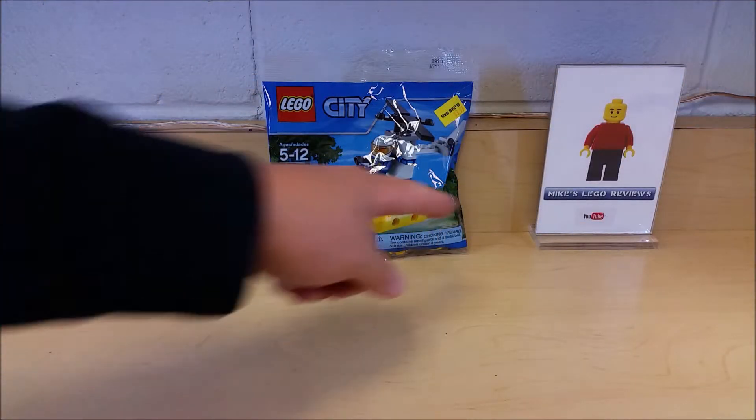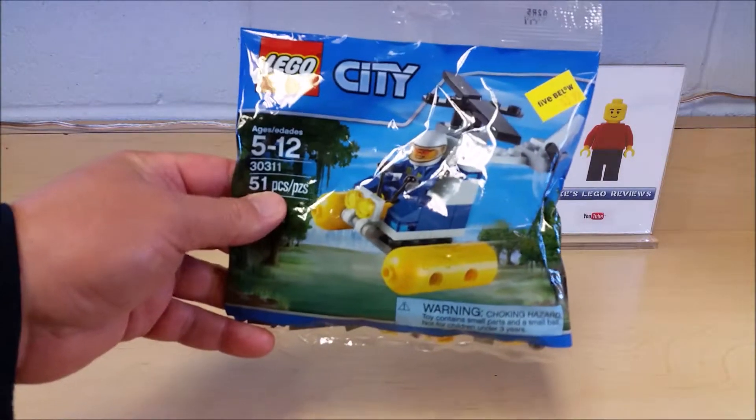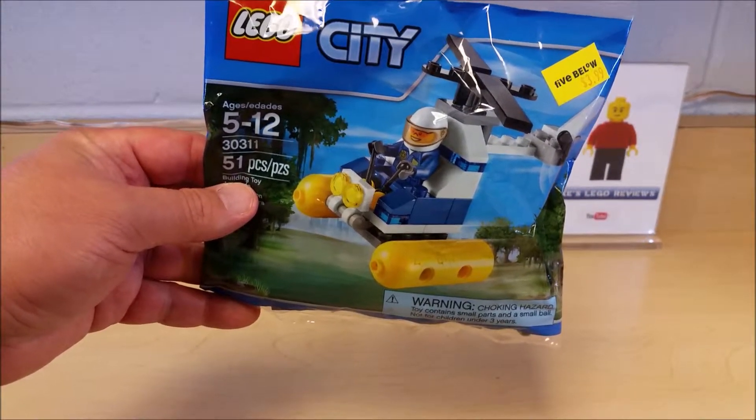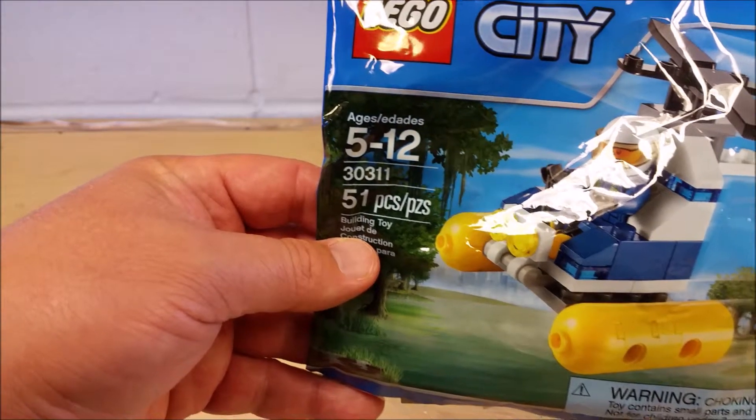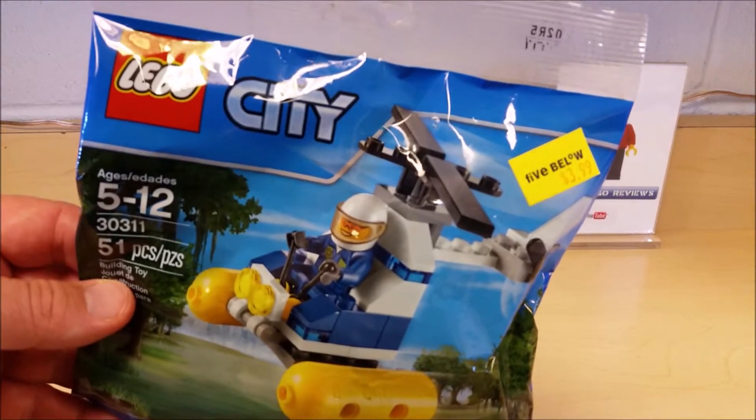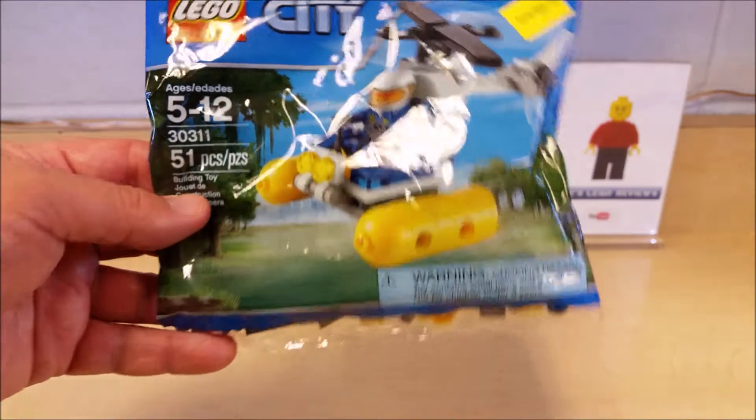Welcome back YouTubers, another episode of Mike's Lego review. Thanks for tuning in. I've got a review here of the Lego police helicopter. As you can see, it's set 30311, 51 pieces in the poly bag. I got this at Five Below for $3.99. They have some great scores on little Lego poly bags, it's hit or miss.